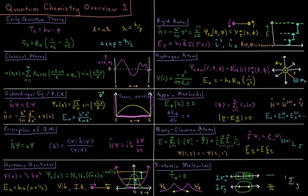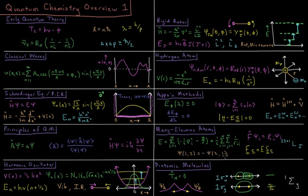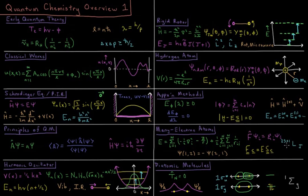We then move on to many-electron atoms, applying these approximation methods. We have Hartree-Fock theory, where the energy of an atom is a sum over all electrons of their kinetic energy and attraction to the nucleus, plus the repulsion between all pairs of electrons. The wave function must be anti-symmetric with respect to exchange of two electrons, giving rise to the Pauli exclusion principle. We develop the Fock operator to give orbital energies and the Hartree-Fock equations for general atomic energies. We also look at term symbols, which represent distinct electronic states depending on electron configurations.